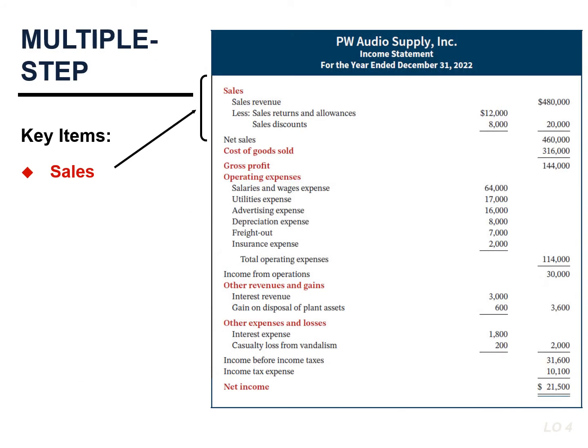The first line item is sales. The income statement for a merchandising company typically presents gross sales for the period. The company deducts sales returns and allowances and sales discounts — both contra accounts — from sales revenue to arrive at net sales. The excess of net sales over cost of goods sold is gross profit, which represents the merchandising profit of a company. PW Audio's gross profit is $144,000, calculated by subtracting cost of goods sold of $316,000 from net sales of $460,000.